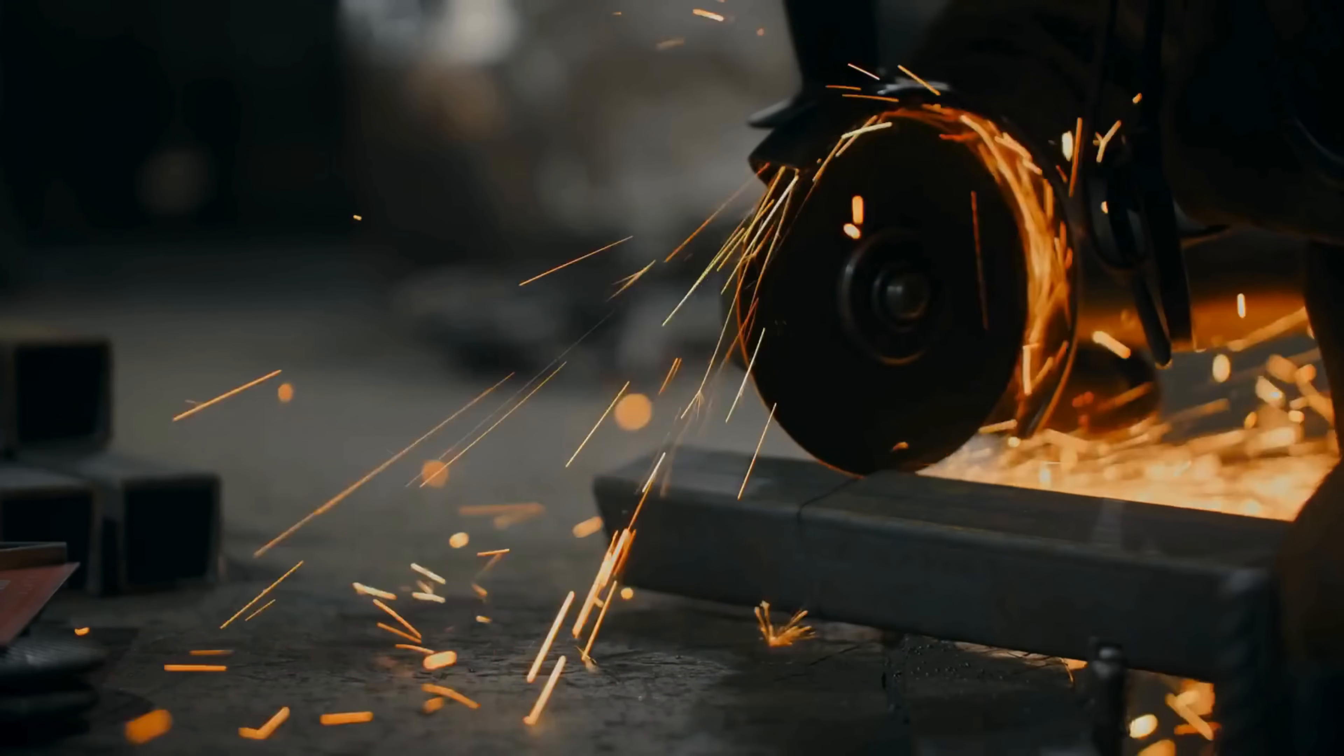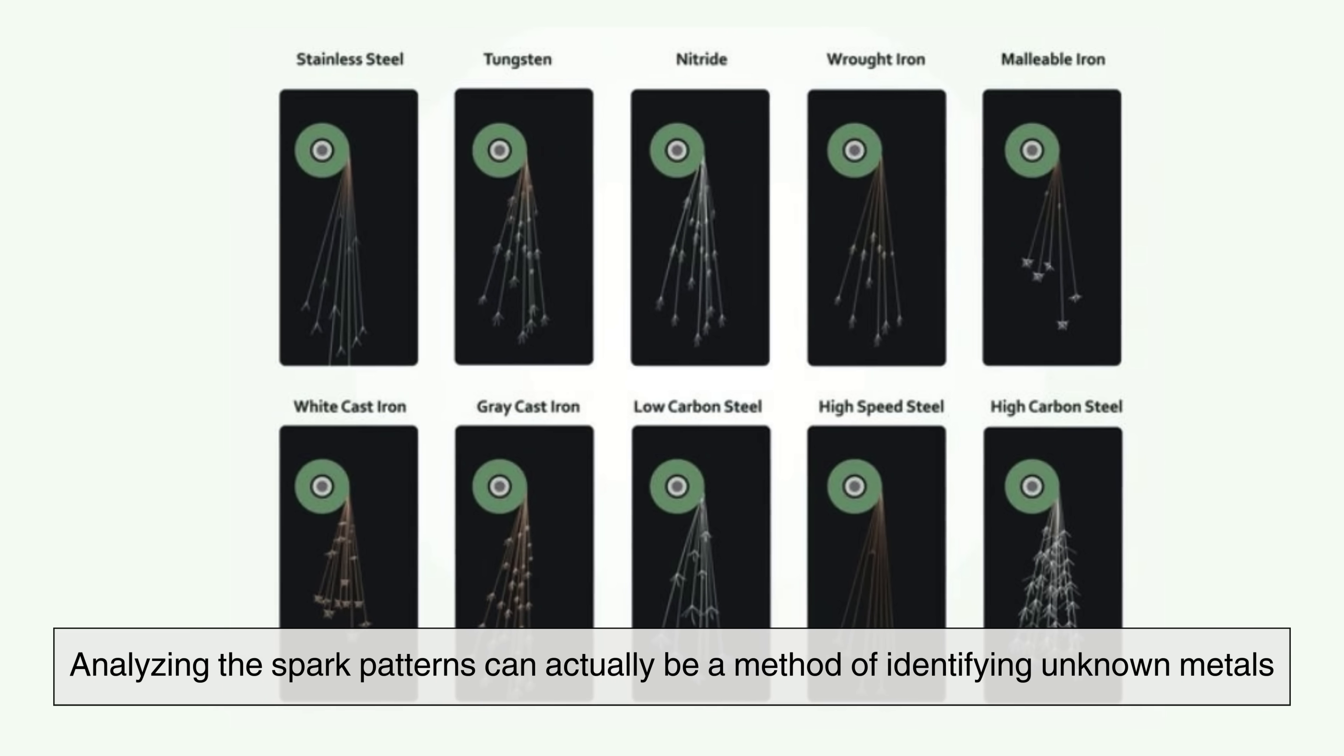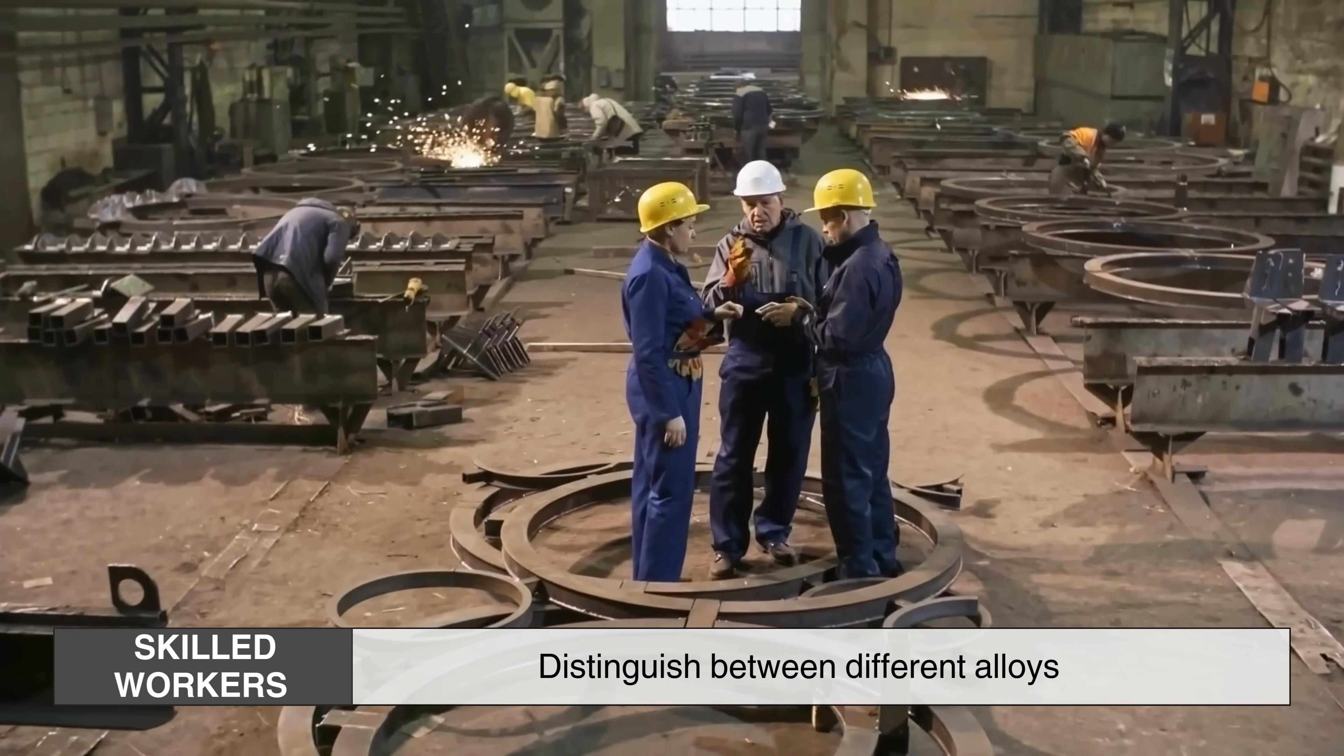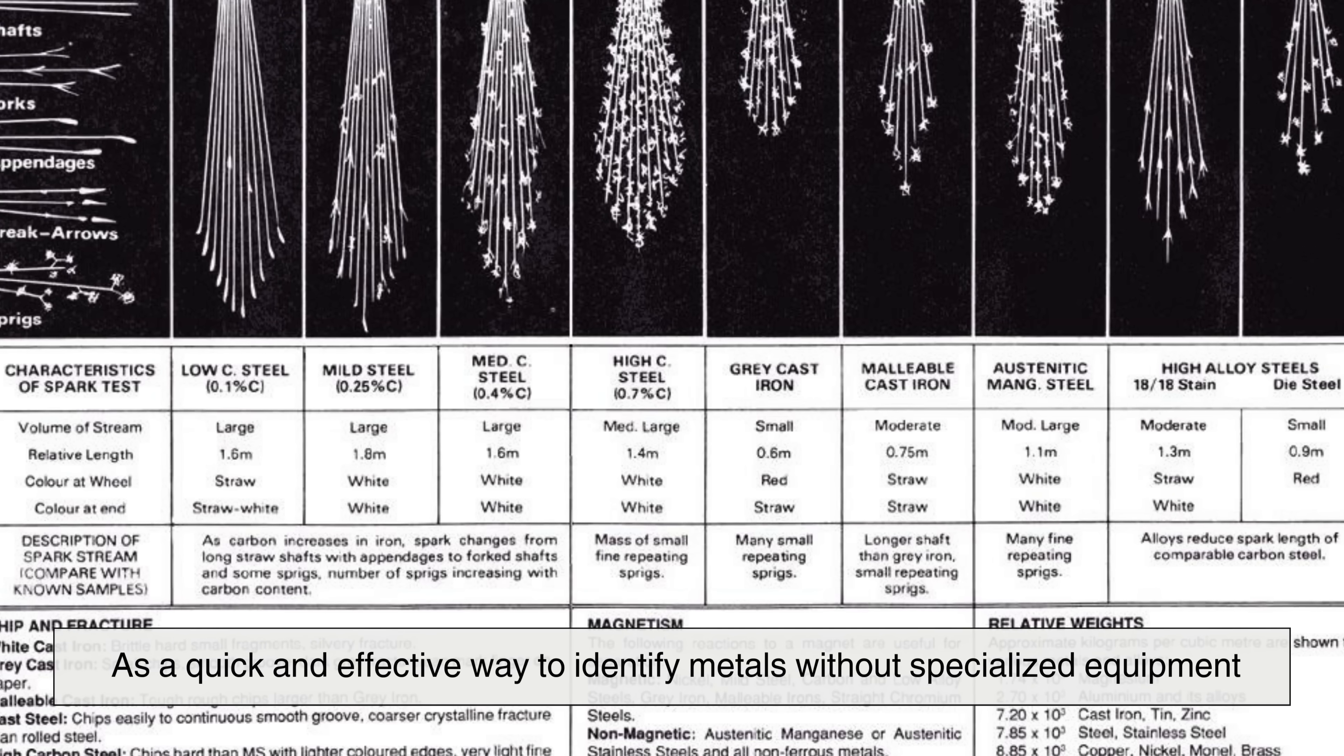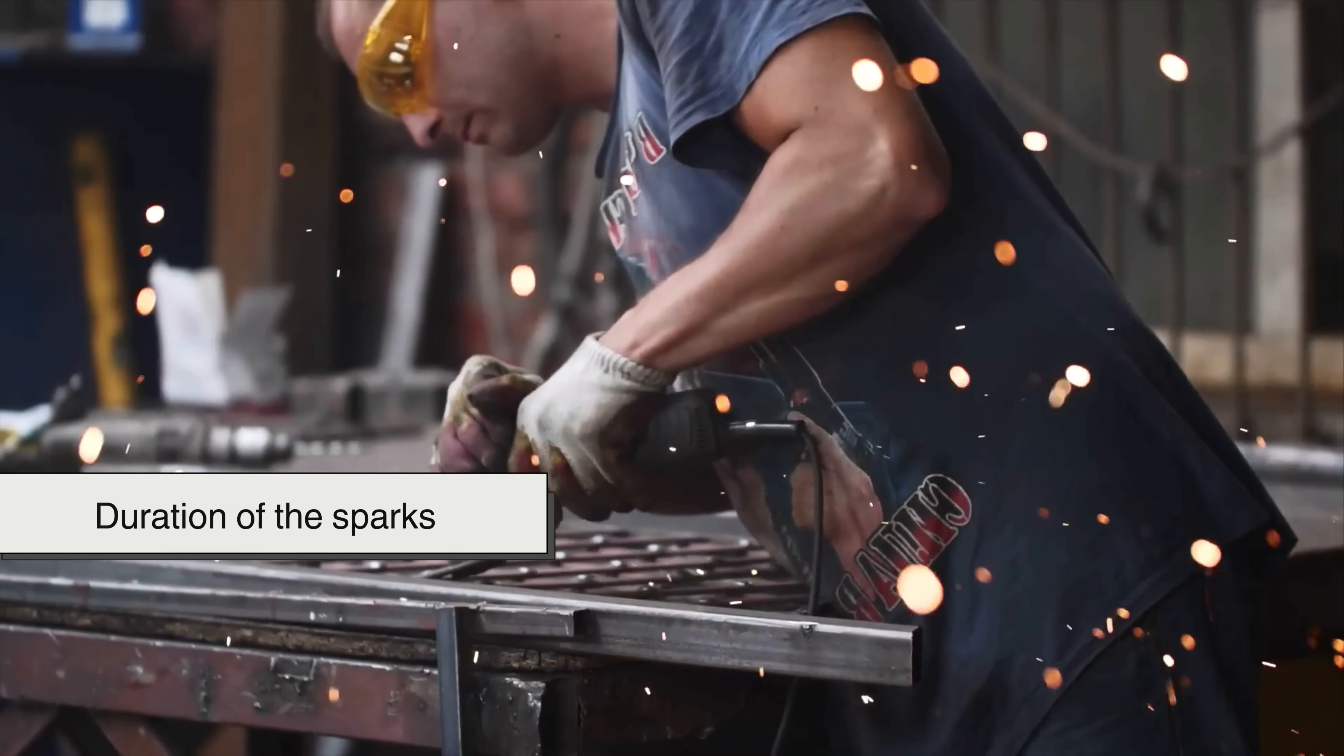The practical applications of understanding these sparks extend beyond mere curiosity. In metalworking industries, analyzing the spark patterns can actually be a method of identifying unknown metals. Skilled workers can often determine the carbon content of steel or distinguish between different alloys just by observing how the sparks behave. This technique, known as spark testing, has been used for decades as a quick and effective way to identify metals without specialized equipment. The presence of certain alloying elements can be inferred based on the brightness, branching, and duration of the sparks.